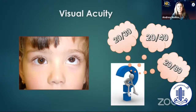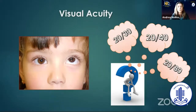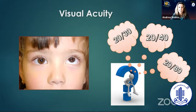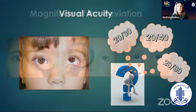Assessing visual acuity is very important, especially in very asymmetric cases where you're probably thinking of doing a unilateral superior rectus recession. In these cases, you must make sure that the non-preferred eye will never get fixation in order to avoid post-operative problems or inversion of the deviation.